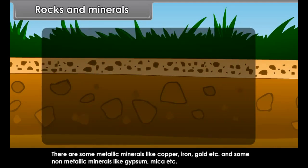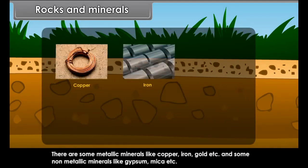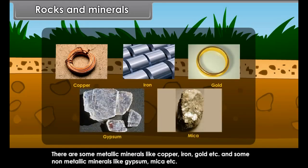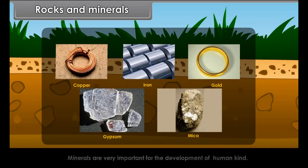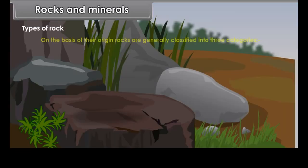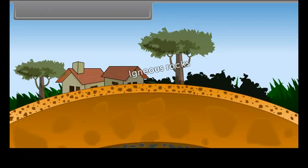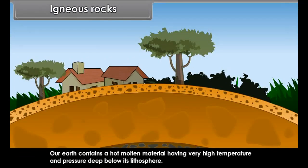Rocks and Minerals. Rock is the hard material that makes up the Earth's crust. Various combinations of minerals make up hundreds of different types of rocks. Rocks are made up of individual substances called minerals, found mostly in solid state. Minerals are natural inorganic substances which have definite chemical composition and physical properties. They are usually crystalline, but some minerals are non-crystalline.